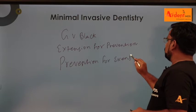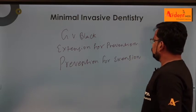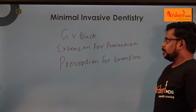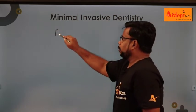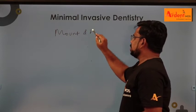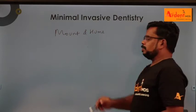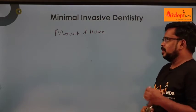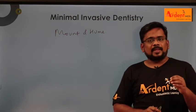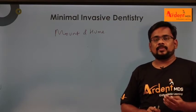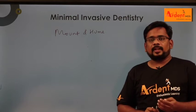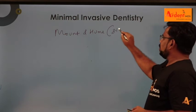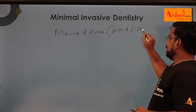The new concept and classification was given by Mount and Hume. You know very well about J.V. Black's classification - class 1 to class 6. The Mount and Hume classification for minimal invasive dentistry is based on the site where the lesion is located - whether it is a pit and fissure, cervical area, or contact area - and what is the size. So the classification for minimal invasive dentistry is based on site and size.